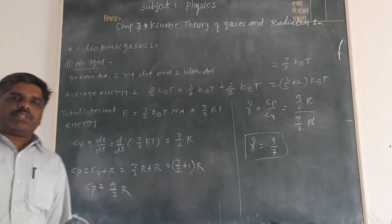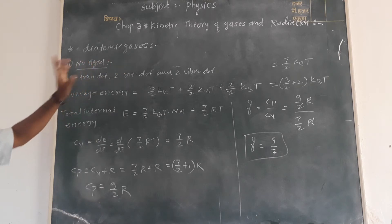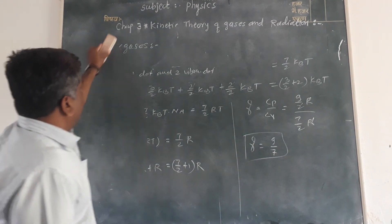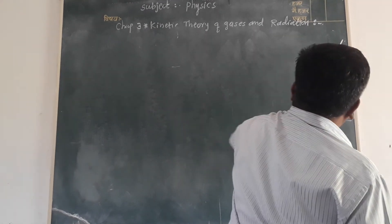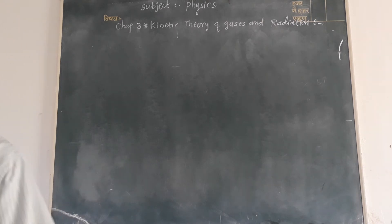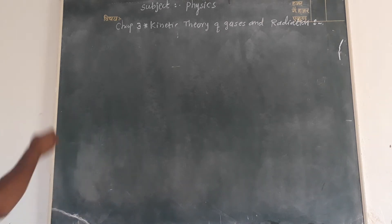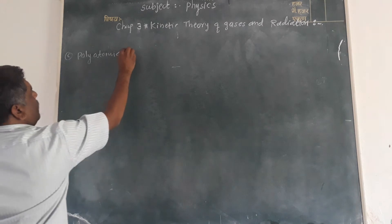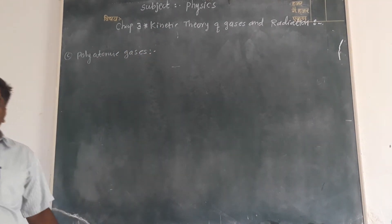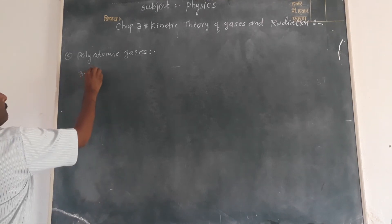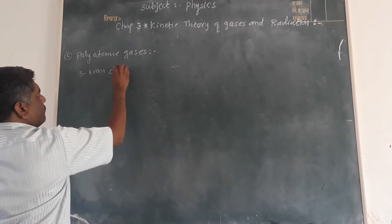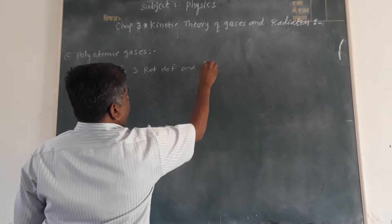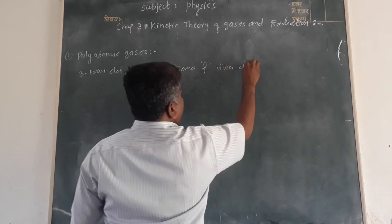This is the adiabatic ratio in the case of diatomic non-rigid gases. Now the third type is polyatomic gases. Polyatomic gases have three translational degrees of freedom, three rotational degrees of freedom, and y number of vibrational degrees of freedom.